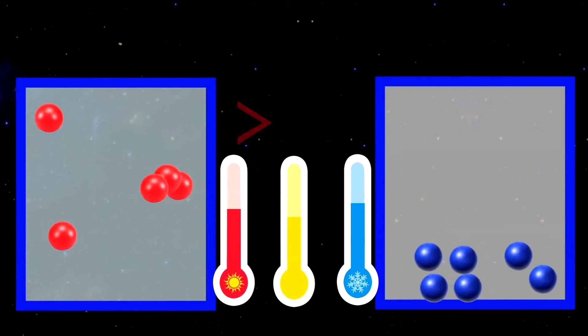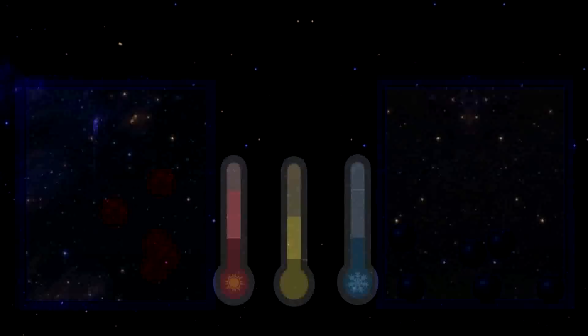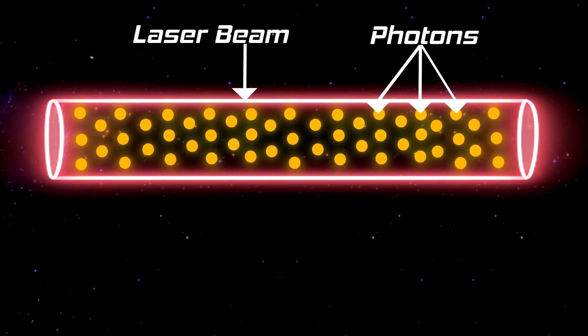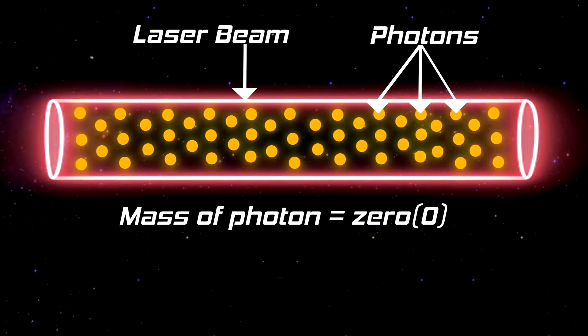To cool a system, we need to slow down the particles moving in the system. But how do massless photons in a laser beam slow down particles having mass?